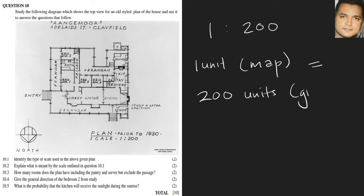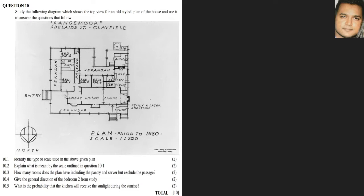How many rooms does the plan have, including the pantry and server but excluding the passages? Using the rooms in this particular layout, we count: one, two, three, four — the kitchen — five, six, seven, eight, nine, ten, eleven, twelve. So we have 12 rooms.